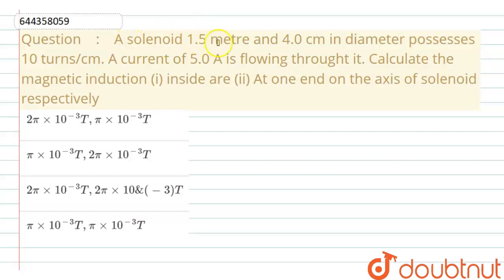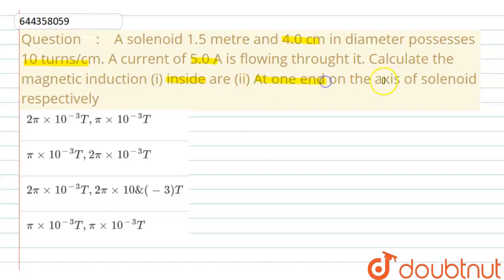Hello dear students. Here the question is: a solenoid 1.5 meter long and 4 centimeter in diameter possesses 10 turns per centimeter. A current of 5 ampere is flowing through it. Calculate the magnetic induction inside and at one end on the axis of the solenoid respectively.